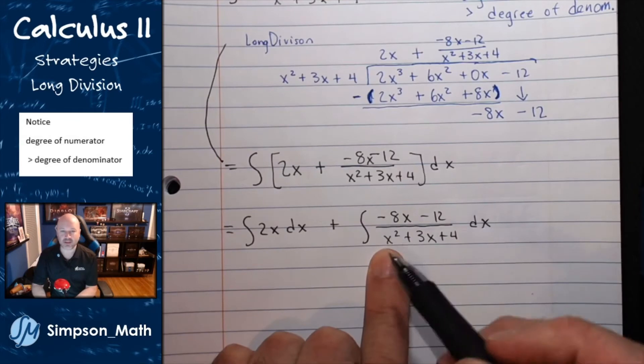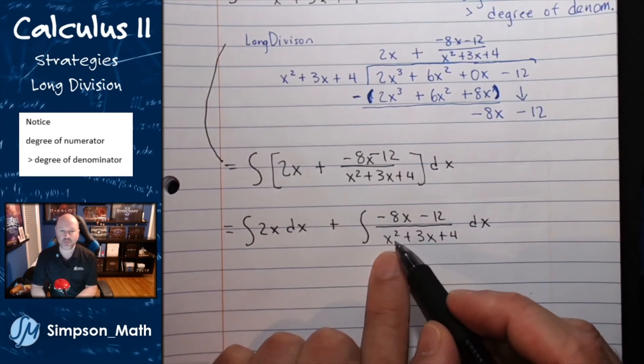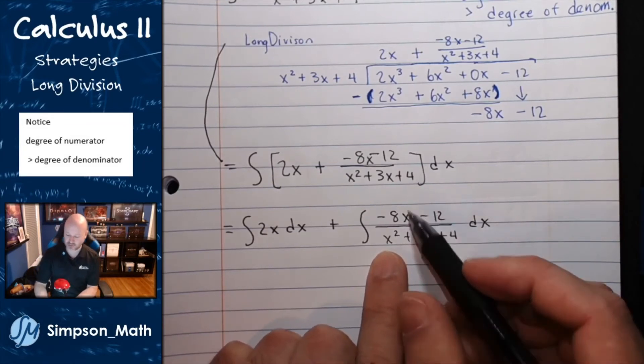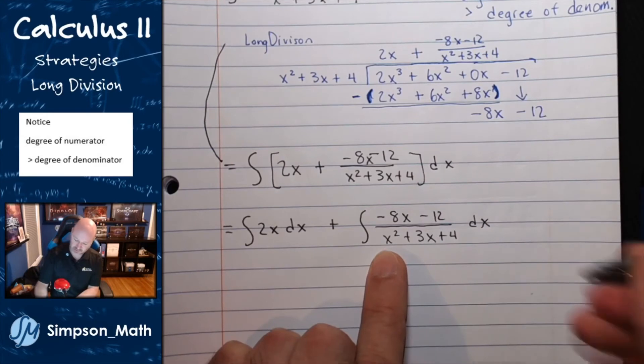Maybe I can get u substitution to work. Because, if I let u be this x squared, this whole trinomial, then du is going to be an x to the first power. I think that's going to work out.